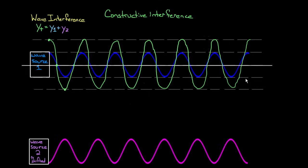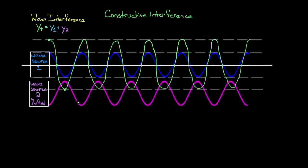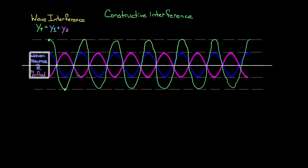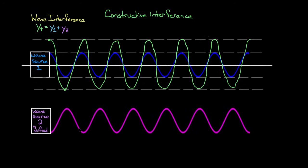Let's say you had a different wave source two. This one is what we call pi-shifted — instead of starting at a maximum, this one starts at a minimum compared to wave source one. So it's one half of a cycle ahead of, or behind, wave source one. Half of a cycle is pi, because a whole cycle is two pi. That's why people often call this pi-shifted, or 180 degrees shifted. Either way, it's out of phase from wave source one by half of a cycle.